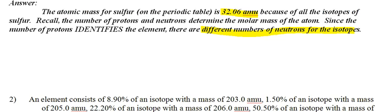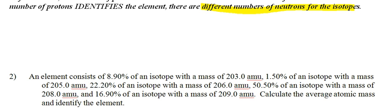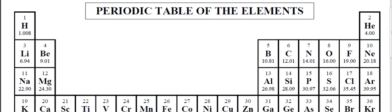Number 2. Very similar to the example. I think it was the first example. It says an element consists of the following percentages with the following masses. Calculate the average atomic mass and identify the element. Now, I didn't have you identify the element in the examples, but what you would need to do is go to the periodic table after you finish.